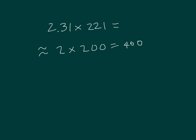And let's show the standard algorithm for that. 231 hundredths times 221. 1 times 1 is 1, 1 times 3 is 3, and 1 times 2 is 2. Place a 0. 2 times 1 is 2, 2 times 3 is 6, and 2 times 2 is 4. Place 2 zeros.